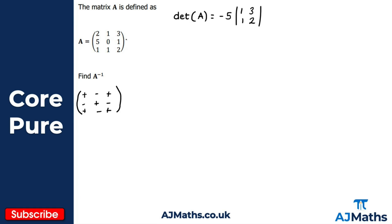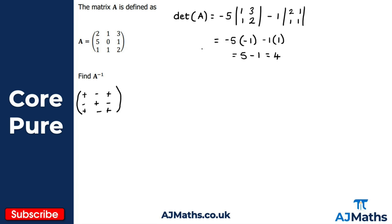The zero in the middle means we skip that element — multiplying the 2x2 determinant by zero gives zero. The 1 at the end is also negative, so we get minus 1 times the 2x2 determinant left from eliminating that row and column: 2 1 1 1. Evaluating: minus 5 times (1×2 − 1×3) = minus 5 × (−1) = 5, and minus 1 times (2×1 − 1×1) = minus 1 × 1 = −1. So the determinant of A is 5 − 1 = 4.